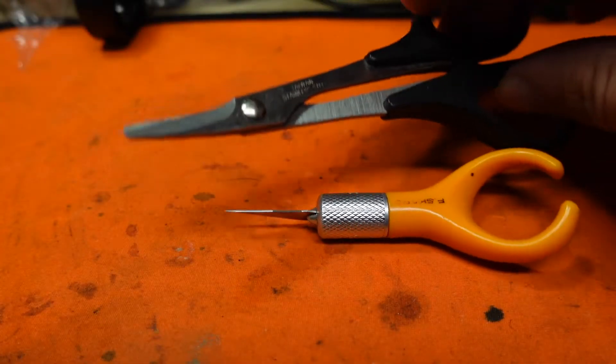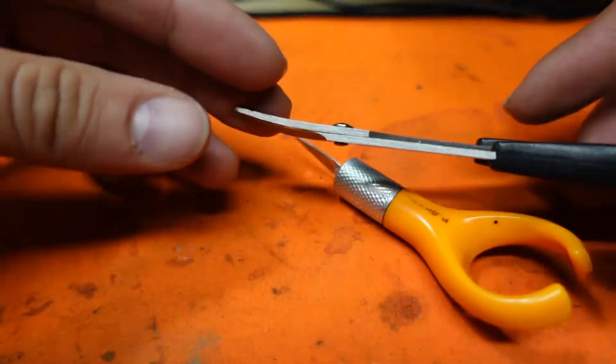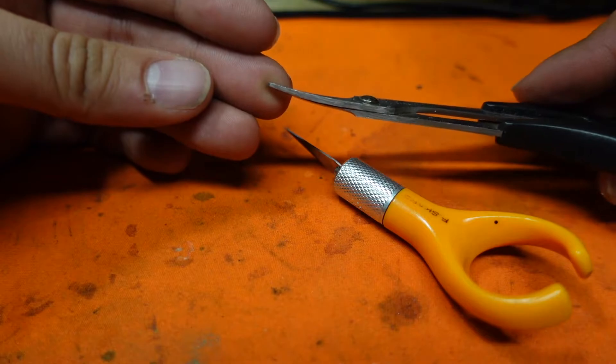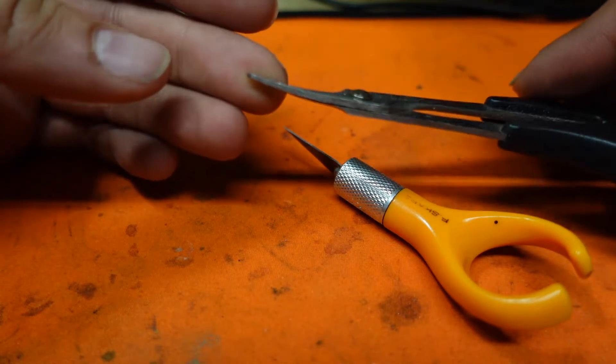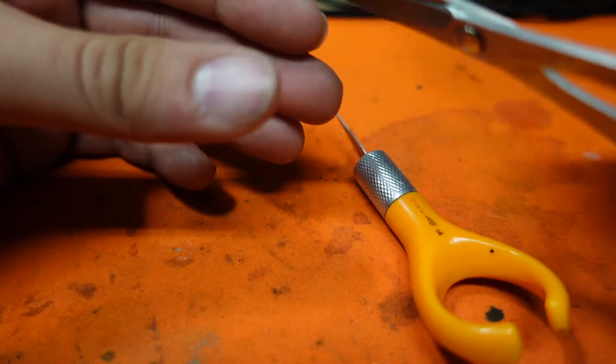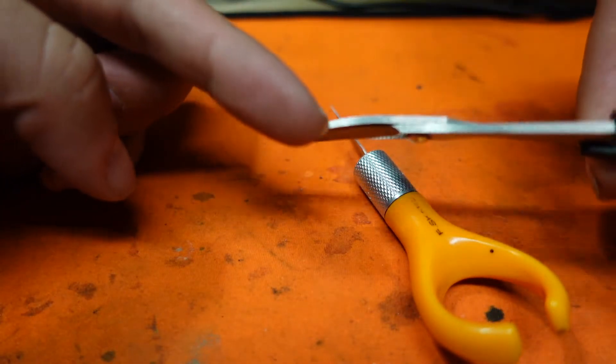Two of the tools I never leave home without when cutting out a body would be my curved Lexan scissors. These curved blade scissors help you walk around radiuses and for me, they really help me clean up a lot of my cuts that I make after the fact with my X-Acto blade.